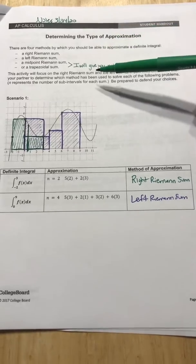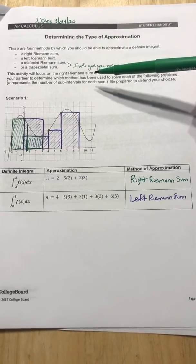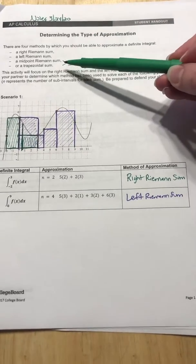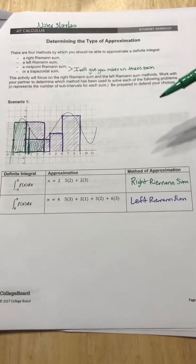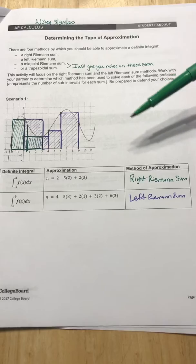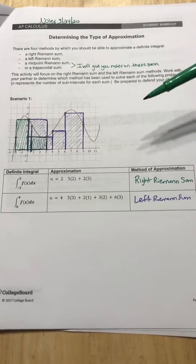So up here it talks about four methods that you can use to approximate definite integrals, midpoint and trapezoid. I'm going to give you notes on in a little bit. But this packet is just about left and right Riemann sums. So we're going to focus on that.